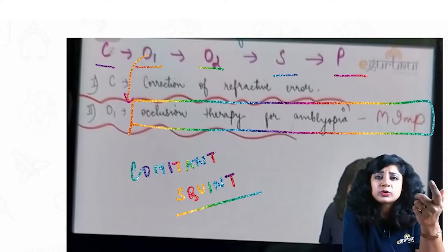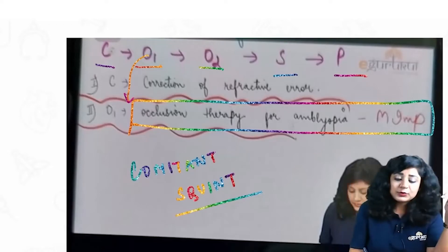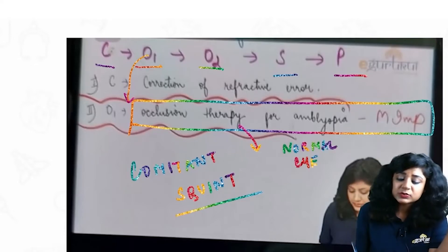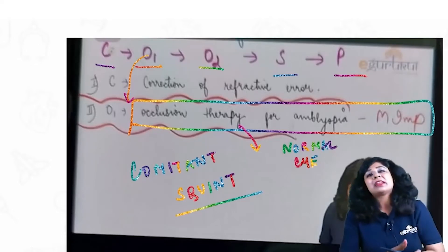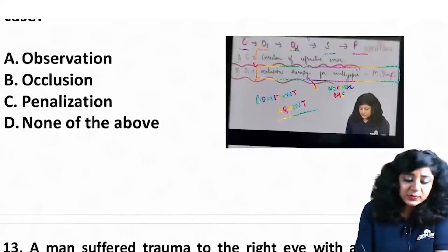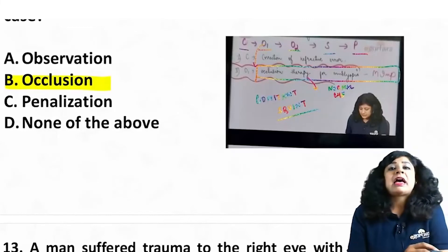Now what do you want to occlude? This eye? No, we want to do the occlusion of the normal eye. When I am covering the normal eye, I am actually stimulating the squint eye to see. That is the main idea behind giving the occlusion therapy. So obviously, the answer to this question is occlusion.